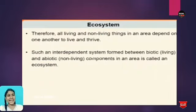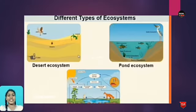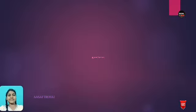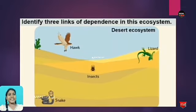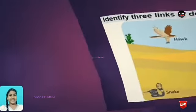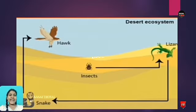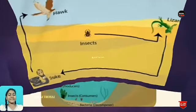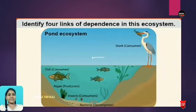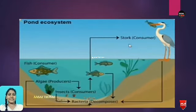This is an ecosystem. There are different types of ecosystems — the desert ecosystem and the pond ecosystem. In the desert ecosystem, observe: the hawk is eating the snake, the snake is eating the lizard, and the lizard is eating insects. This is the desert ecosystem, and this other one is the pond ecosystem.